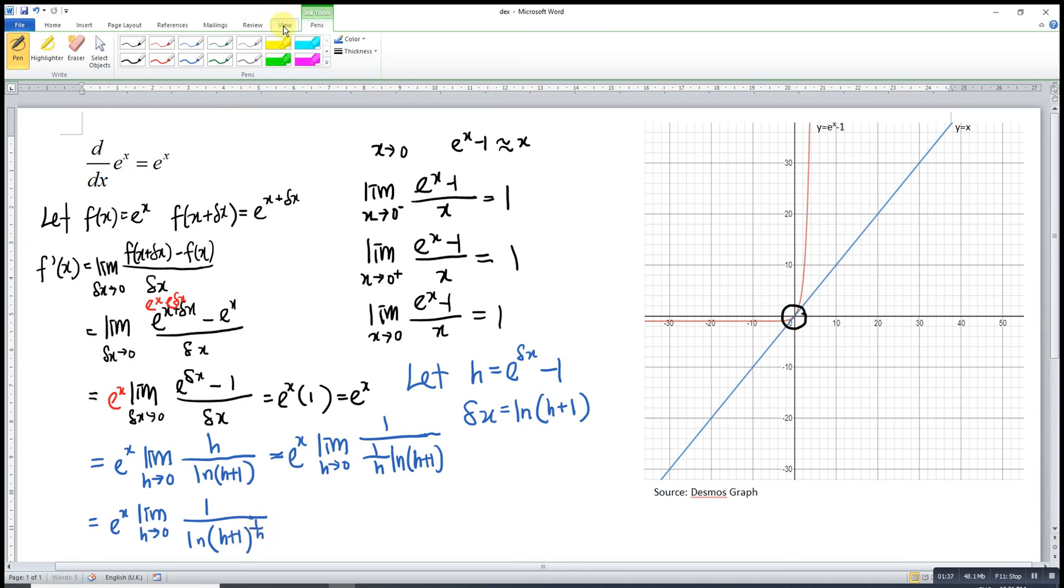Then by using the properties of ln, we can shift the coefficient to become the power. So from here, we can recognize that this, when the limit approaches 0, we have actually e. So meaning to say we have e^x times 1 over ln(e).